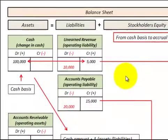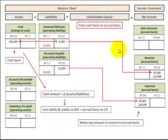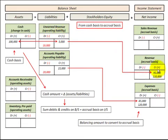For a simple example, we had a $100,000 debit balance in cash and an unearned revenue credit balance of $5,000. We need a balancing entry — in this case a revenue account for $95,000, which is $100,000 minus $5,000. That converts our cash basis and unearned revenue to an accrual basis revenue account.